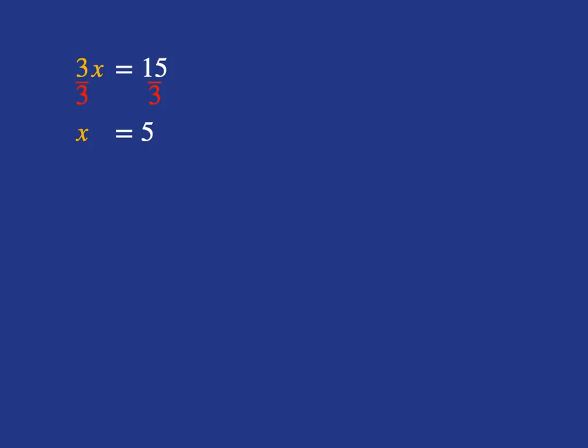All very pretty, nice whole number. If you have something like this, 7x is equal to 5, process is exactly the same. You want to get x on its own, so you have to divide by 7. What you do to one side, you must do to the other, so we're going to divide both sides of the equation by 7.